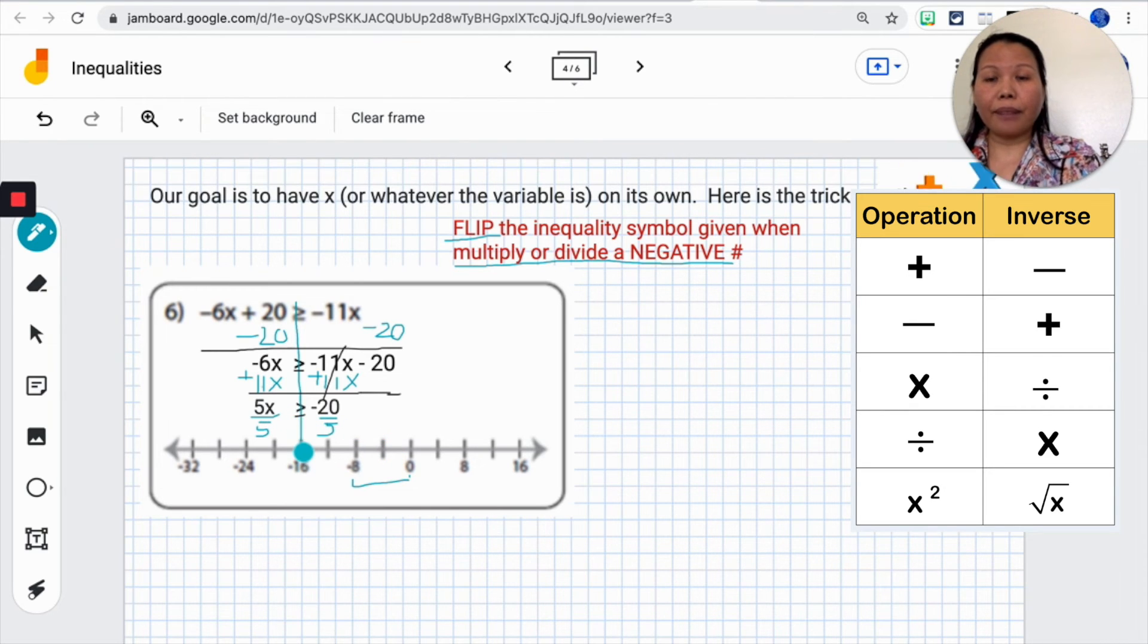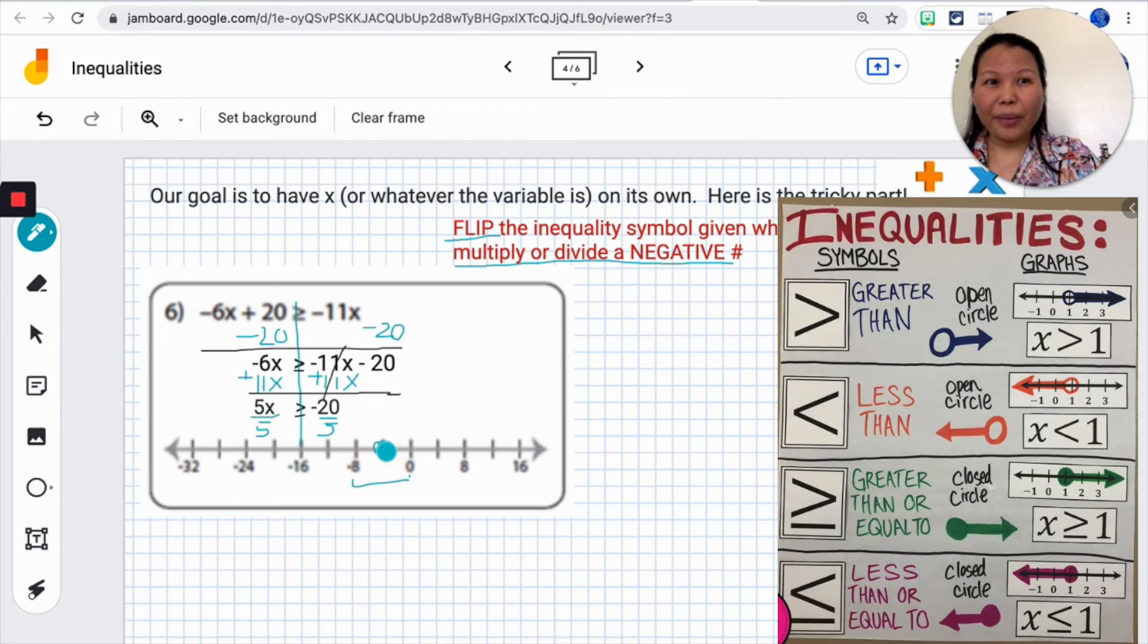It is a greater or equal to and notice there's a little dash underneath the inequality. It's going to be greater or equal to. I'm going to make a solid dot instead of open dot. Remember when we would use an open dot? When there's no equal in the problem.